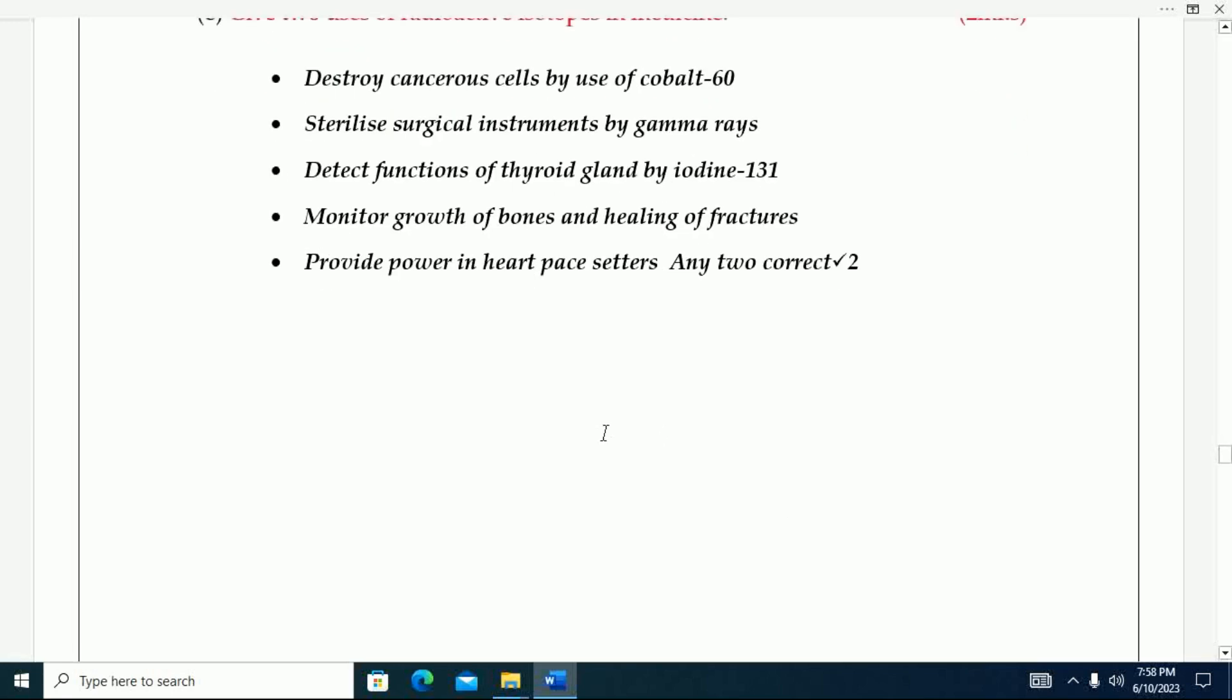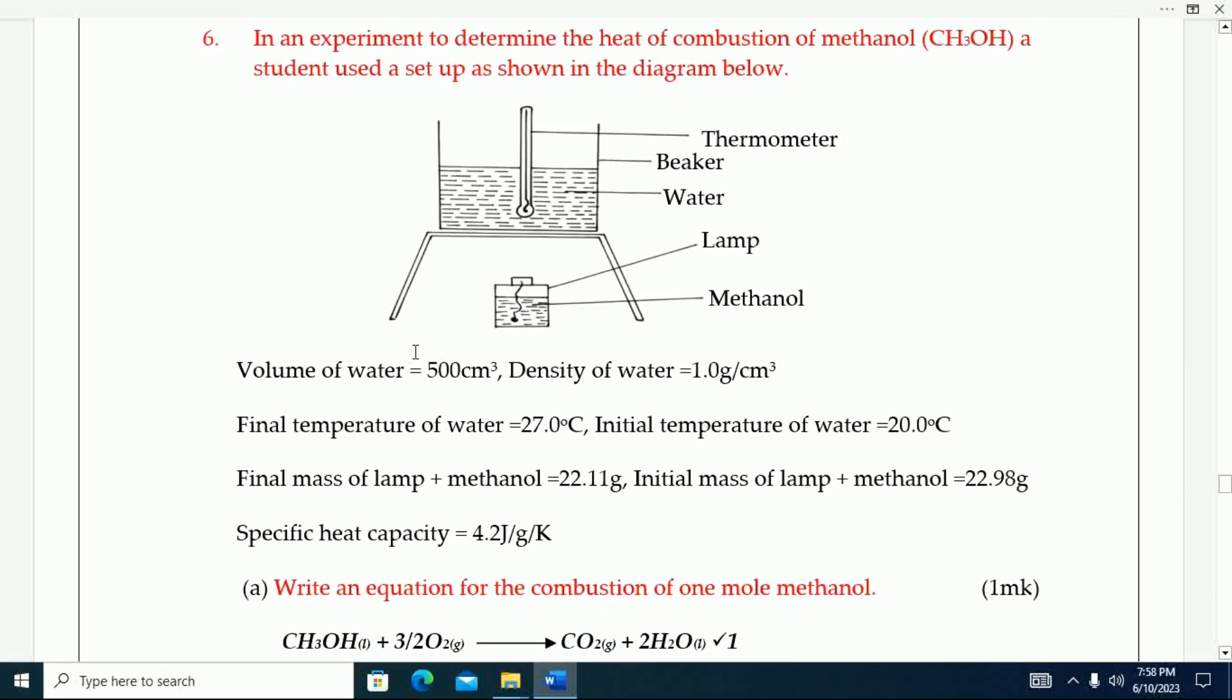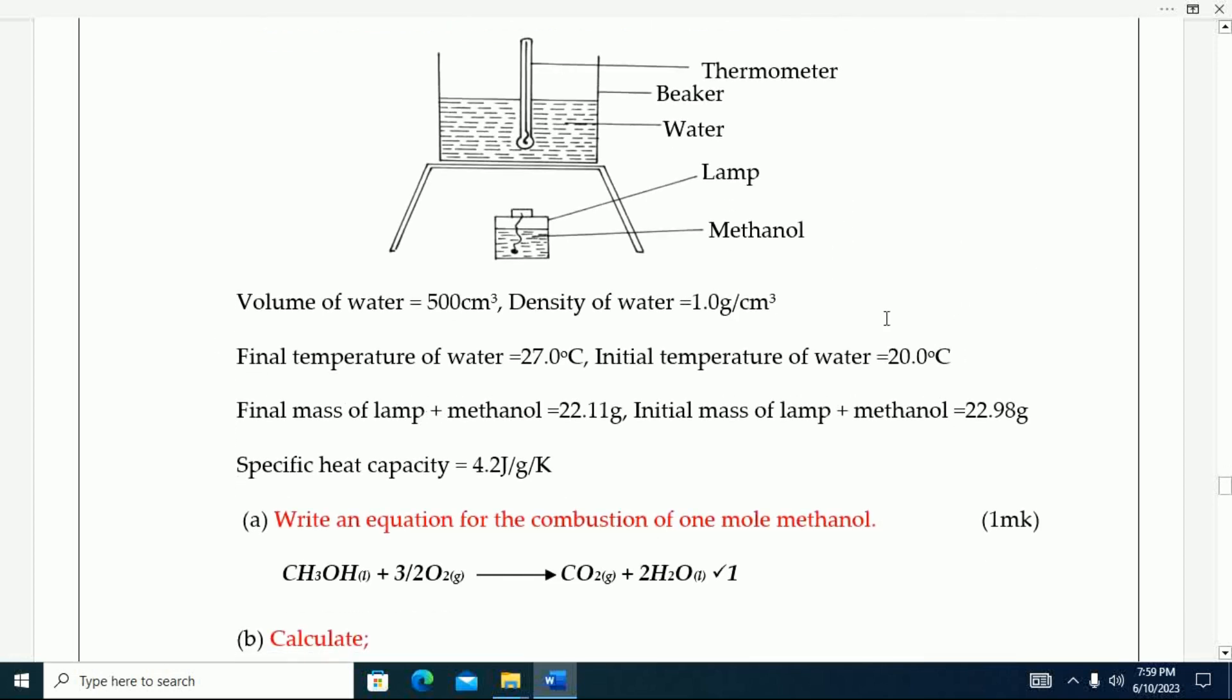Number six: In an experiment to determine the heat of combustion of methanol, a student used a setup as shown in the diagram. Thermometer, beaker, water, lamp, and volume of water, final temperature, initial temperature, final mass of lamp plus methanol.